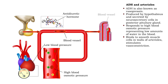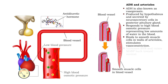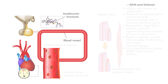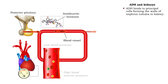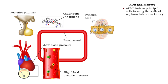The result is vasoconstriction, which increases resistance and helps raise blood pressure back toward normal. In the kidneys, ADH binds to the principal cells forming walls of the nephron tubules.